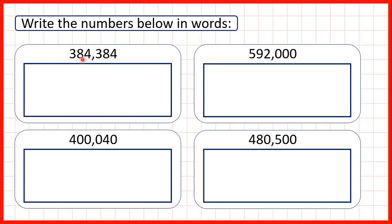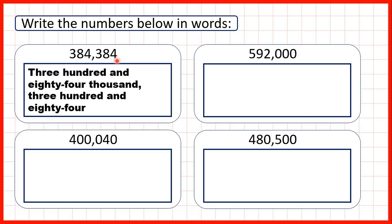So here we have 384 and then a comma. So we can write three hundred and eighty-four thousand. Then we just read the rest of our number and we have 384. So this number is three hundred and eighty-four thousand, three hundred and eighty-four.